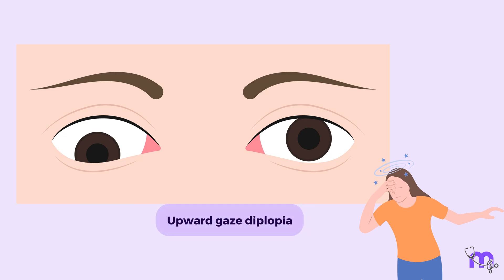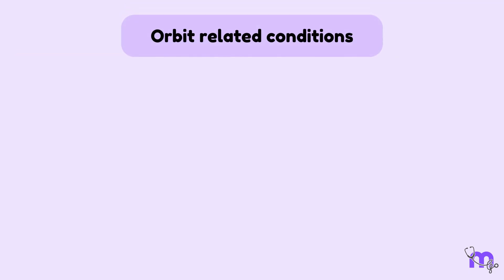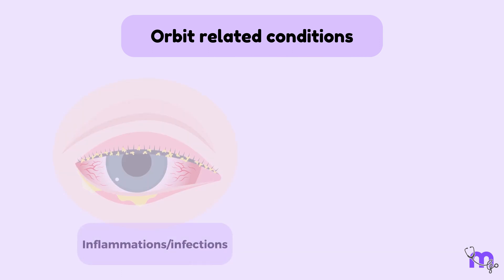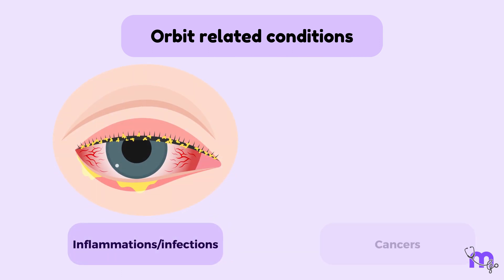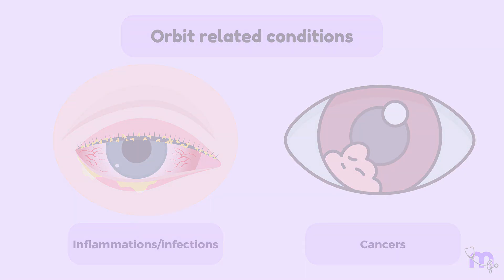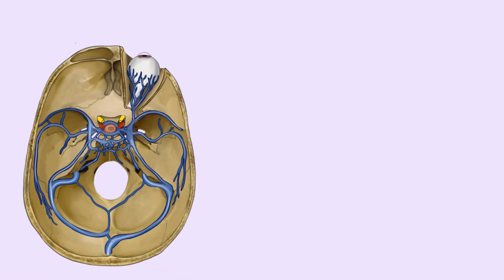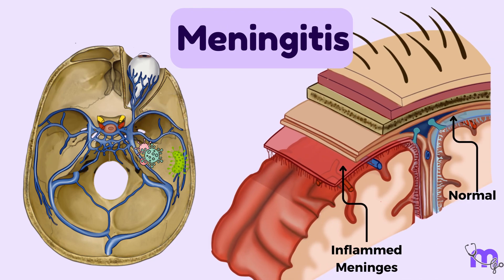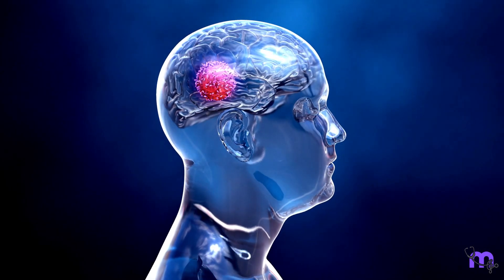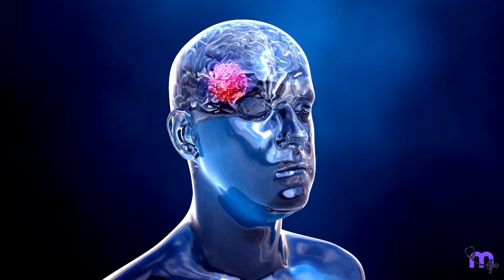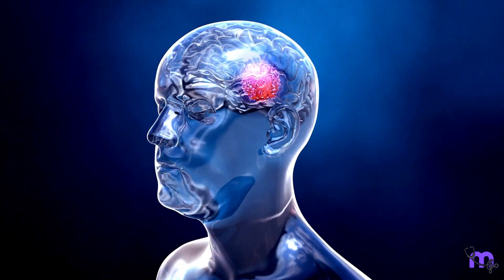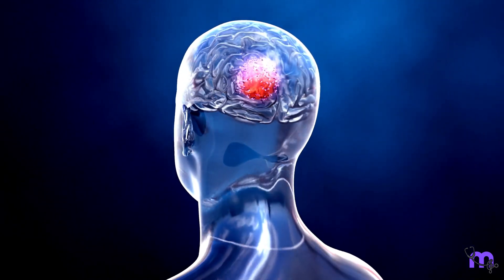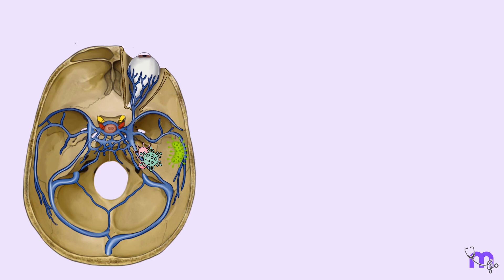The next commonly seen condition involving the orbit is inflammations, infections, and cancers. Because the orbit communicates with the cranial fossa, infections can infiltrate into the cranium, leading to meningitis. Neoplastic processes can give birth to metastatic masses within the brain tissue. The orbit's connections to the cranium can be a major cause for grave consequences.